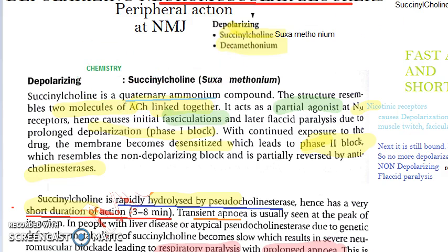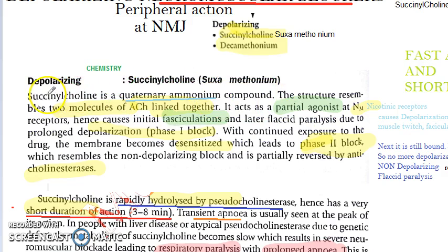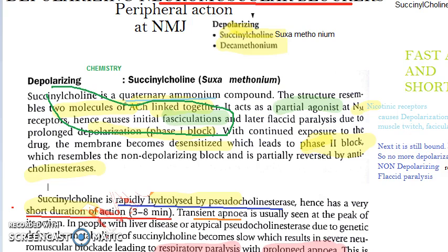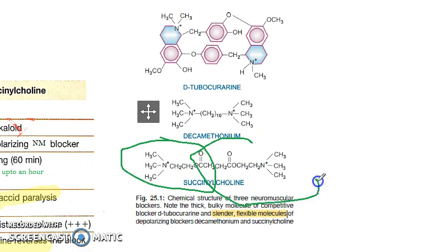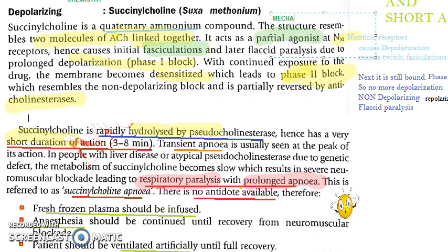In the chemistry, we saw that succinylcholine is a quaternary ammonium compound. The structure is like two molecules of acetylcholine linked together. One acetylcholine molecule is shown here for reference. Now let us move on to the mechanism of action.